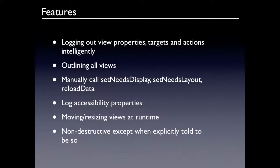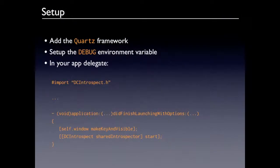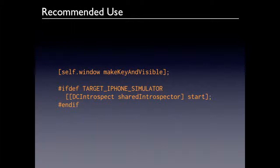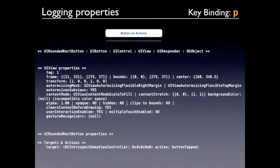It's really easy to set up. You just add the Quartz framework if you don't already have it, set up a debug environment variable — which I think is on by default now — and then in your app delegate, import the header file and it's a singleton where you do one call and that's it. The way I recommend using it is wrapping it in the iPhone simulator if-def, because there are private calls in there that will get it rejected automatically if it makes it to the store. You can actually use it on a device with a Bluetooth keyboard.